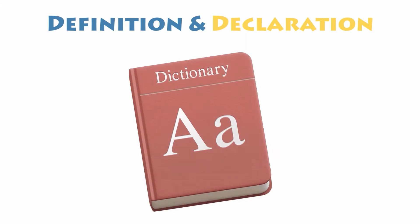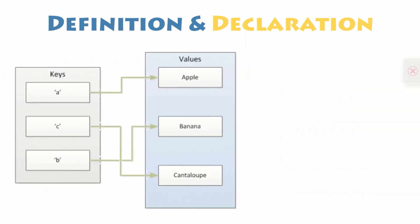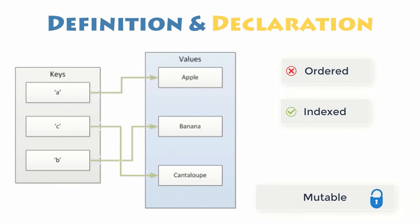Definition. Dictionary in Python is a collection of items which is unordered, indexed by keys and mutable, so it can be changed once it has been created. While other data types have value as an element, a dictionary has a key-value pair where each key is mapped to a single value. Consequently, dictionaries are optimized to get values when the key is known.